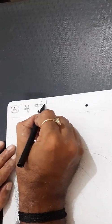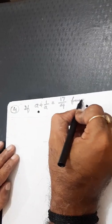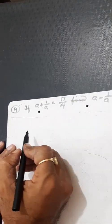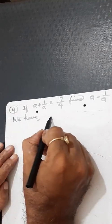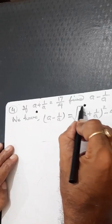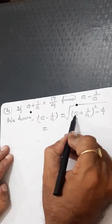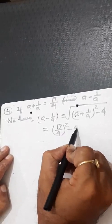First question: if a plus 1 by a is equal to 17 by 4, find a minus 1 by a. We use the formula: a minus 1 by a equals the square root of (a plus 1 by a) whole squared minus 4. This is the formula we need to remember.